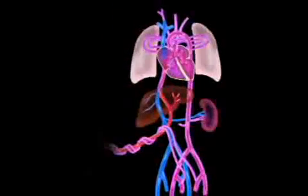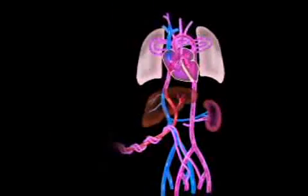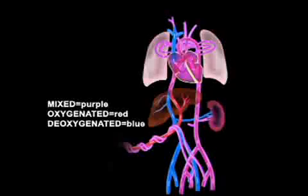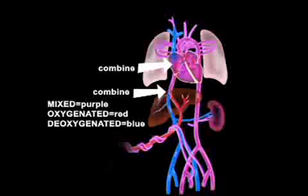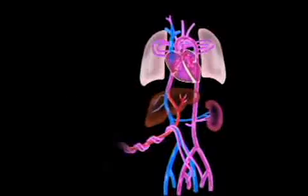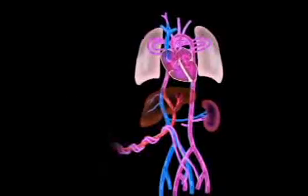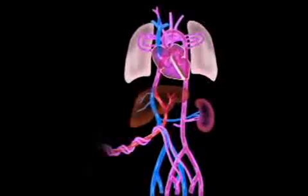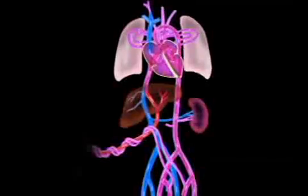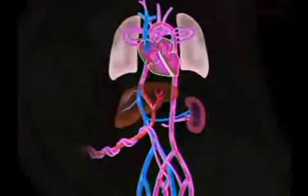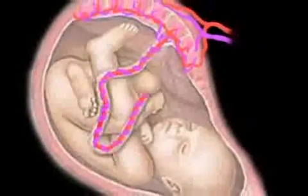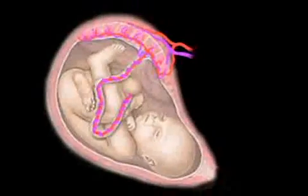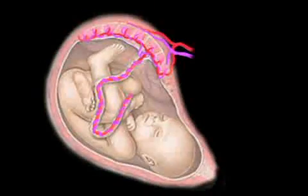In the fetus, the majority of circulating blood is mixed. In other words, venous and arterial blood combine and flow to the organs and other tissues to provide oxygen. Fetal hemoglobin has a much higher ability to carry oxygen than adult hemoglobin and provides the developing fetus with adequate oxygen for normal growth and development, despite the mixing of arterial and venous blood.